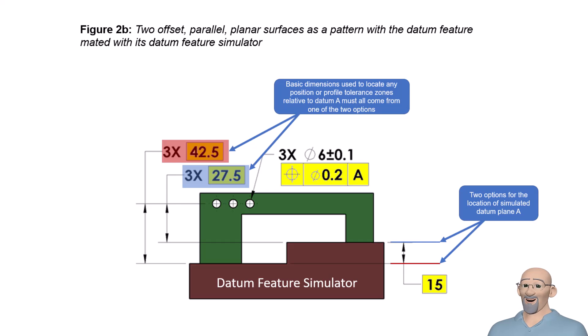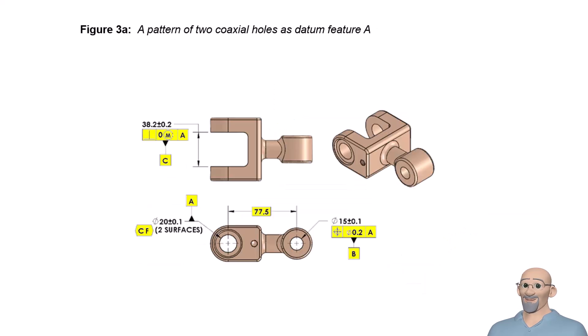Now let's look at our third example. It uses two coaxial holes as datum feature A. In this example, a pattern of two coaxial features of size is used to specify datum feature A. Our cylindrical datum feature simulator will mate with both features and establish one datum axis.